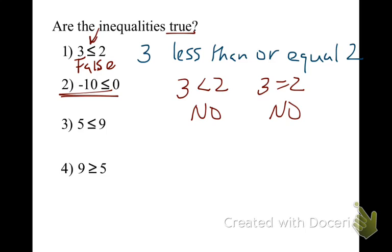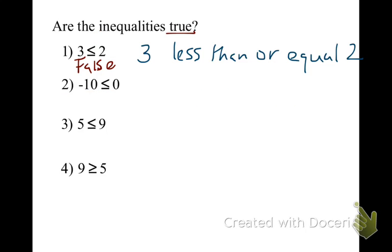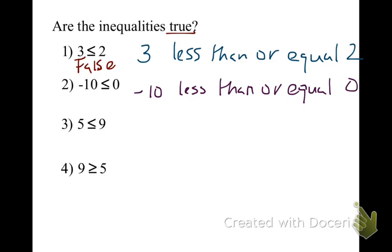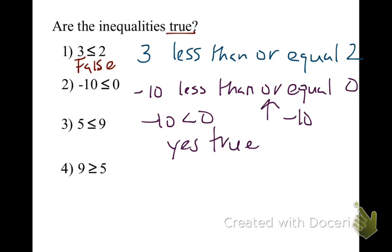Now let's take a look at example number two. This one tells me negative 10 is less than or equal to 0. Is negative 10 less than 0? Yes — so this can be a true statement. Remember the 'or': is negative 10 equal to 0? No. But since part of it is true, this equation is true.